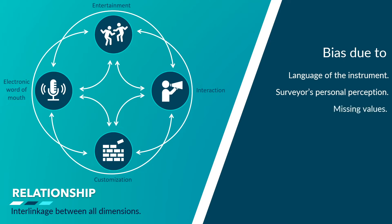Another error is that there could be many missing values in the data. Suppose 100 out of 300 people left one statement in each dimension blank — this won't give me the true value of every dimension. Maybe the respondent hasn't understood the rating scale; he may have meant that he strongly agrees with the statement but chose 1 instead of 5 by mistake. There can also be scattered and irrelevant statements for a dimension. For instance, I want to measure entertainment but I ask: do you think radio is a good tool to promote the brand? Although the question is related, it is not specifically about entertainment from digital social media.